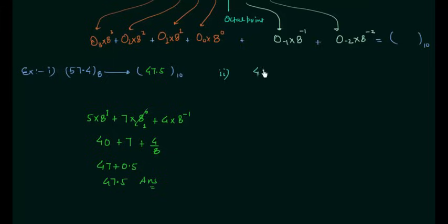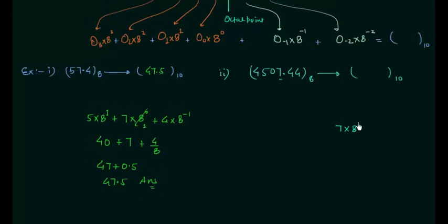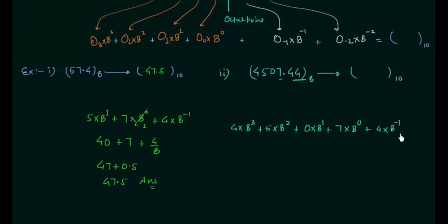Now we will move to the second problem. The number is 4507.44, which is in octal, and we want the decimal equivalent. I will multiply 7 by 8 raised to power 0, 0 by 8 raised to power 1, 5 by 8 raised to power 2, and 4 by 8 raised to power 3. For the fractional part: 4 multiplied by 8 raised to power minus 1, plus 4 multiplied by 8 raised to power minus 2.